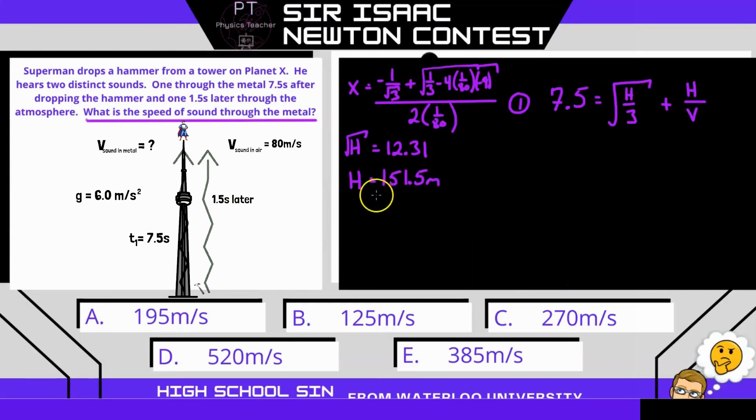So now that I know the height of the tower, I can go back to our first equation, substituting the height of the tower, and then solving for v. So here we have 7.5 is going to equal square root of 151.5 over 3 plus 151.5 over v.